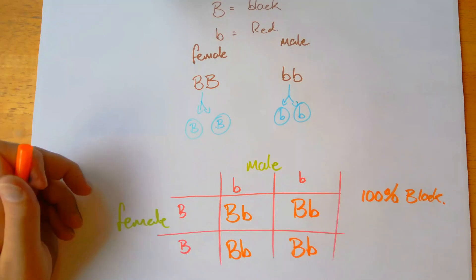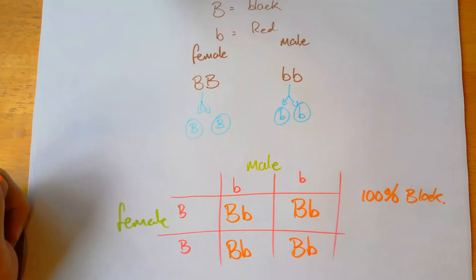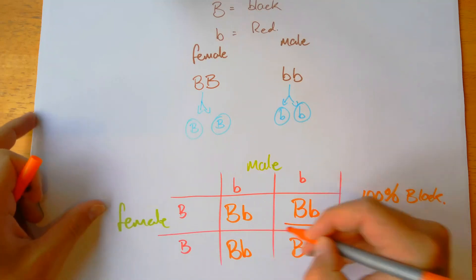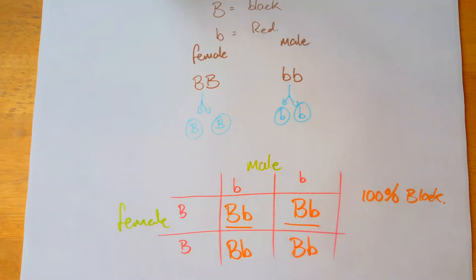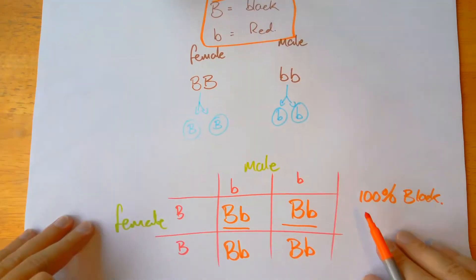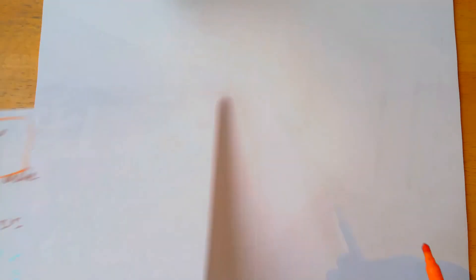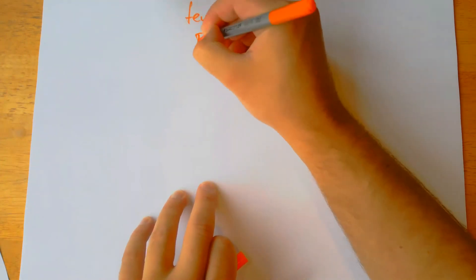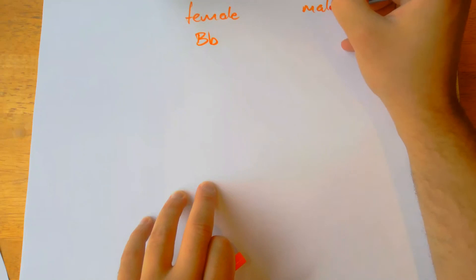The next question asks: if the offspring of this first cross are inbred, calculate the probability that any one offspring will have a red coat. Use a genetic diagram to show your working. So we cross two of these F1 offspring together, keeping the same codes — big B is black, little b is red. We'll have a heterozygous female and a heterozygous male.